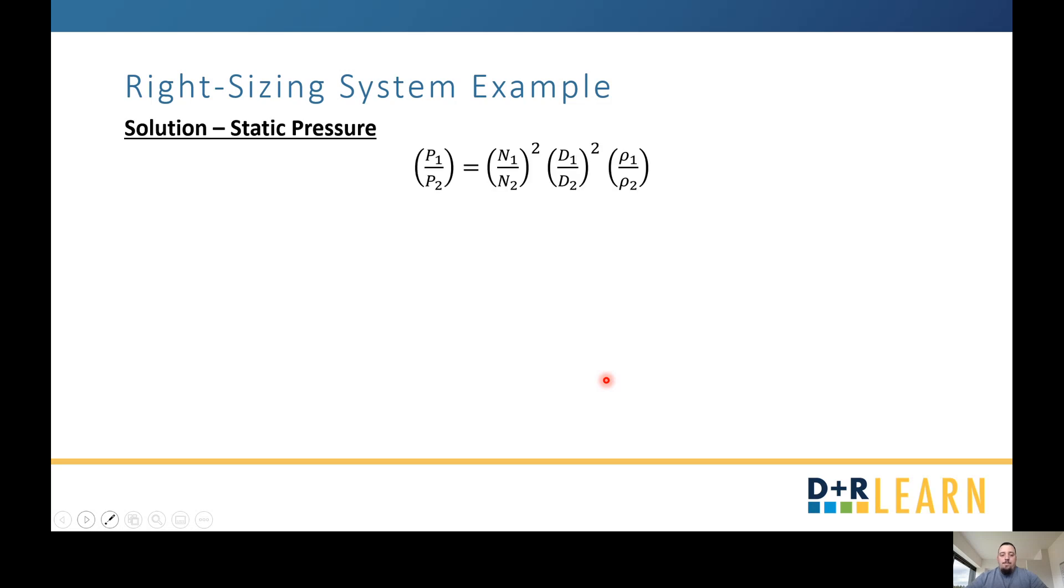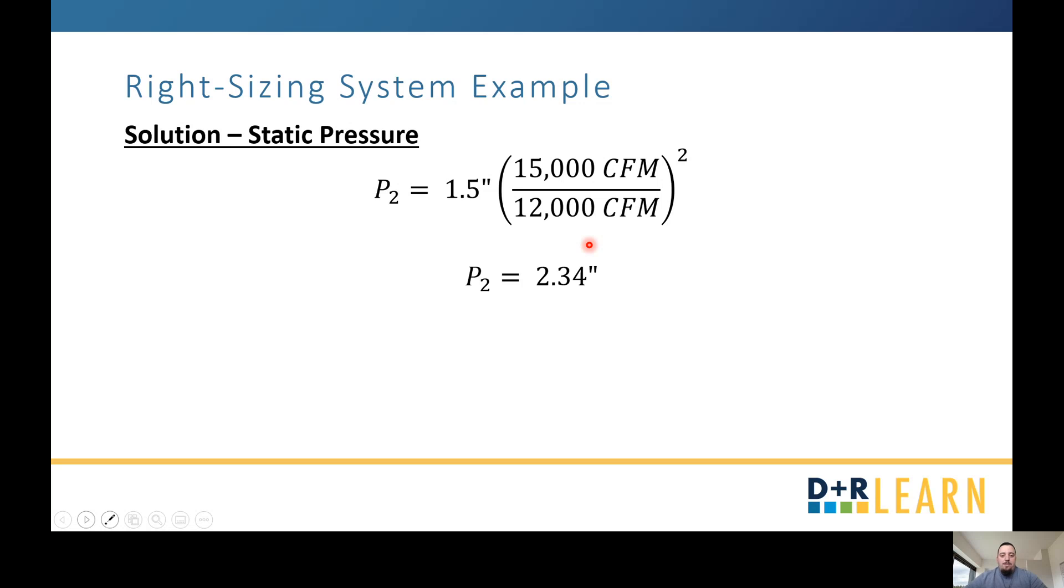Let's move on to static pressure. This is the equation that we talked about. Again, these two variables are the same, so we're going to get rid of those and end up with this correlation. Solving for our new static pressure, this is what we end up with. Our N values are equal to our Q value, so we replace them here and end up with 1.5 inches of static pressure times 15,000 CFM divided by 12,000 CFM squared for a final answer of 2.34 inches water gauge.